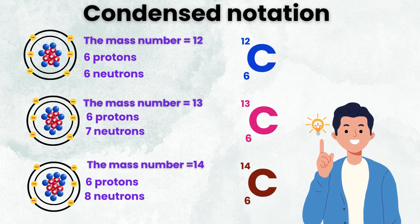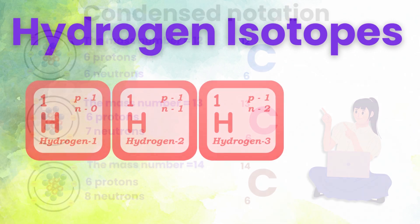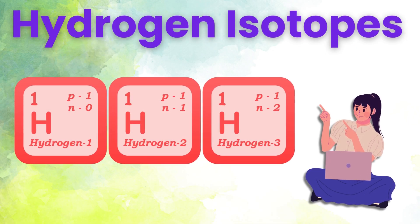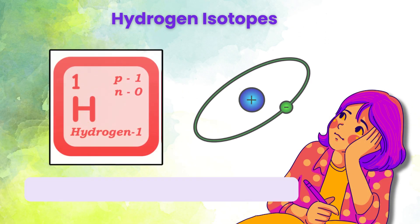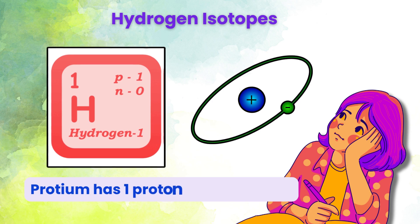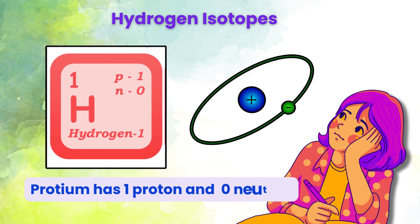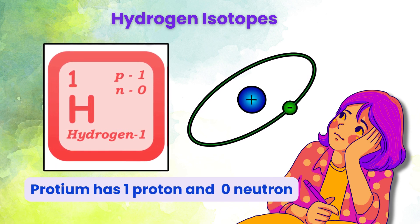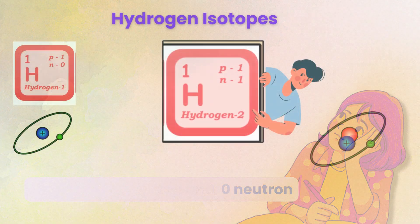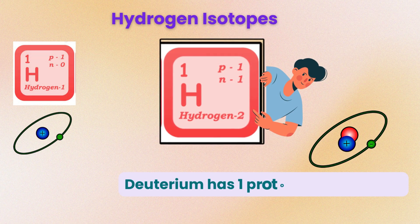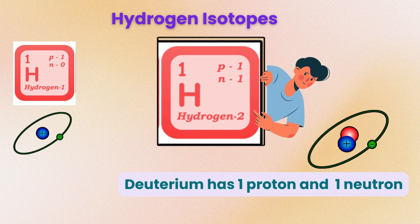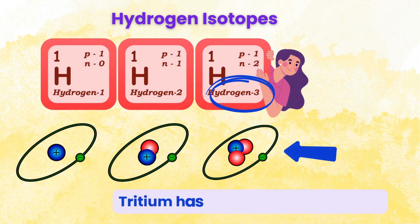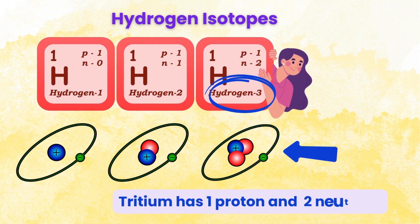Let us look at the hydrogen isotopes. Protium, the most abundant isotope, has one proton and zero neutrons. Deuterium has one proton and one neutron. Tritium has one proton and two neutrons.